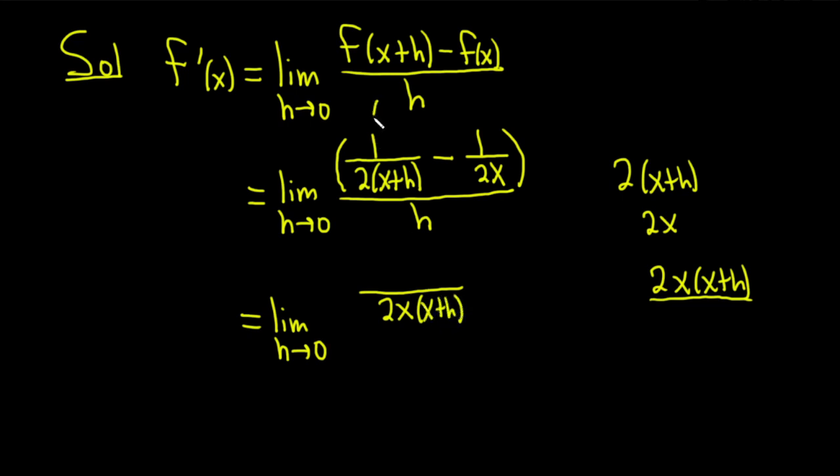And then it's going to be 1 times what's missing here to get the LCD. So we're missing just the x because we already have the 2 in the x plus h. So x minus, and then 1 times what's missing here to get the LCD. Well, we already have the 2 in the x, so we just need the x plus h. This entire top piece is in parentheses, and this is all over h.